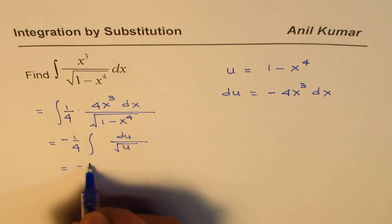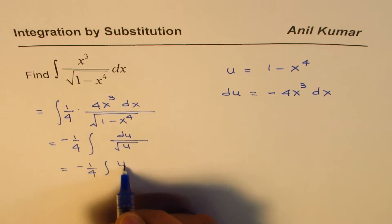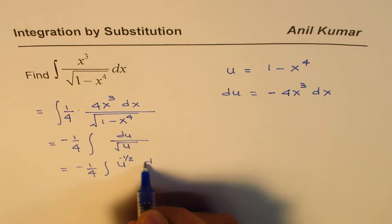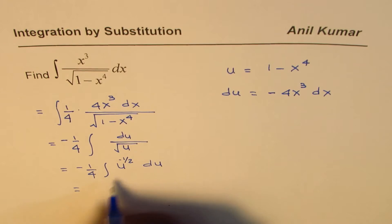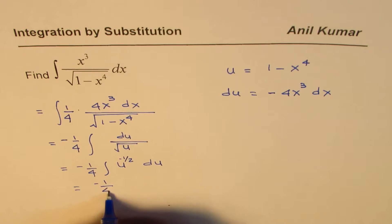Now that could be written as minus 1 over 4, integral of u to the power of negative half, since it was in the denominator, du. So we can apply the power rule, which is minus 1 over 4,